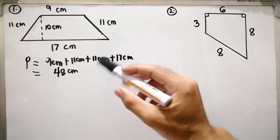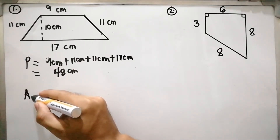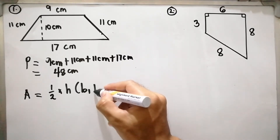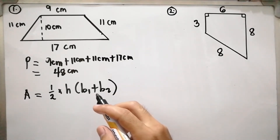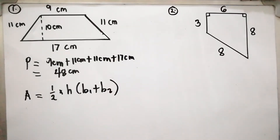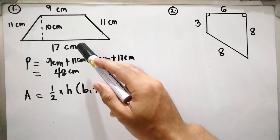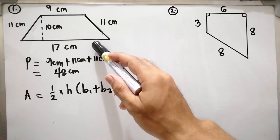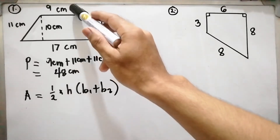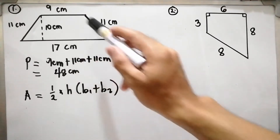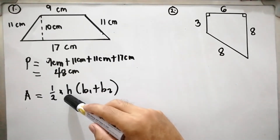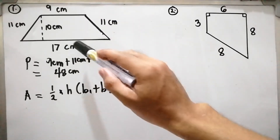For the area of this trapezoid, the formula is A equals one-half times height times the quantity of B sub 1 plus B sub 2, or the sum of the bases. The height is the line perpendicular to the bases of the trapezoid. The bases are not the slant sides — the slant sides are 11 centimeters and 11 centimeters. Therefore, the bases are 9 centimeters and 17 centimeters, since these are the parallel sides. The height perpendicular to these bases is 10 centimeters.